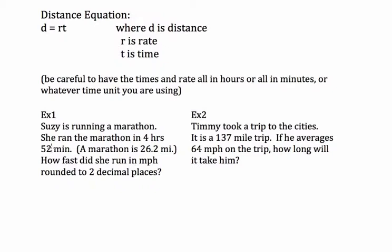Example one: Suzy is running a marathon. She ran the marathon in four hours, 52 minutes - that's her time, t. A marathon is 26.2 miles, so that's d, distance. How fast did she run in miles per hour rounded to two decimal places? So what are they asking us for? How fast? That's your rate. We want to know the rate.